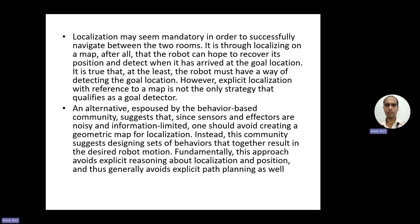It is true that the robot must have a way of detecting the goal position. However, explicit localization with reference to a map is not the only strategy that qualifies as a goal detector. One type of method is the map-based method, where a map exists and the robot follows that map.